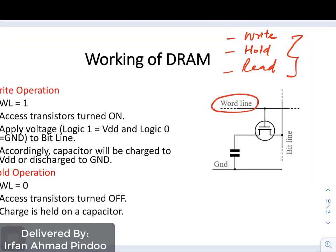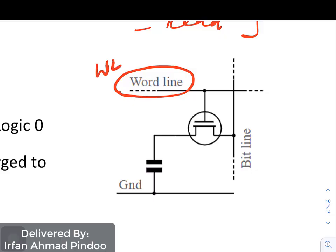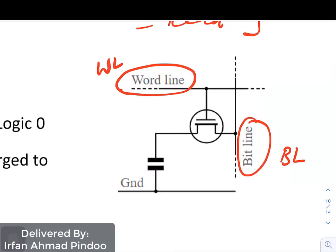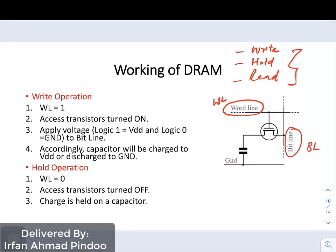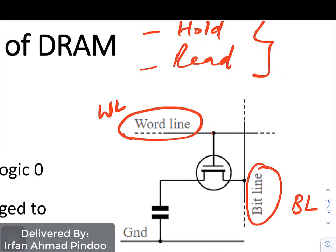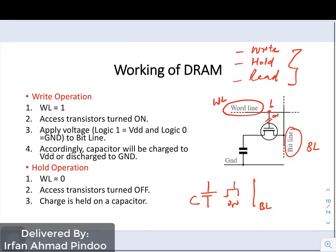In the write operation, we have a word line and a bit line. If you want to start a write operation, the word line must be 1, because if the word line is 0, the capacitor will have no connection with the bit line. The only way to connect them is when the transistor in between is on, and this transistor turns on when the word line value is 1.